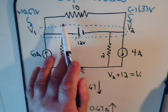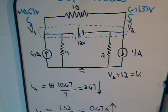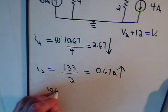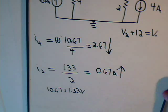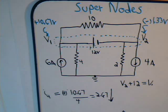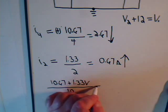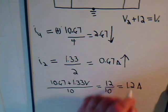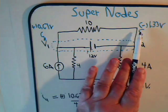Finally, for the 10 ohm resistor: one end is at plus 10.67 volts and the other is at minus 1.33 volts. The difference in voltage across it is 10.67 plus 1.33 volts. So the current is 10.67 plus 1.33 divided by 10, which is 12 divided by 10, equaling 1.2 amps. That current flows from the higher voltage toward the negative voltage.